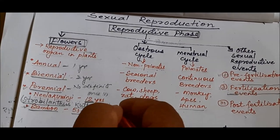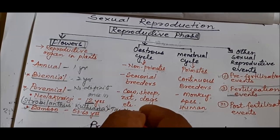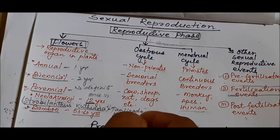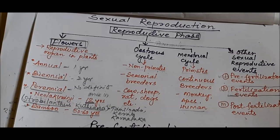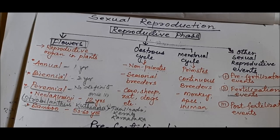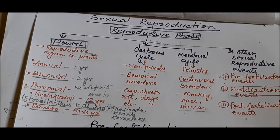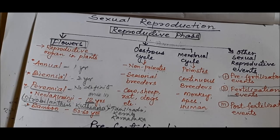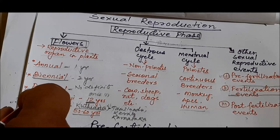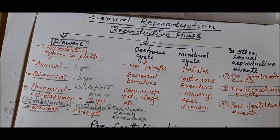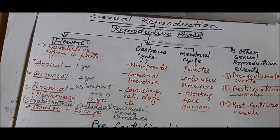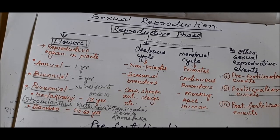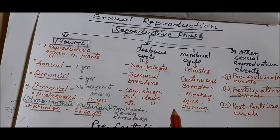The scientific name of Neelakurinji is Strobilanthes kunthiana. It gives a beautiful blue-colored flower found in the hills of Tamil Nadu, Kerala, and Karnataka. In the months of September and October, when these flowers appear, they create a beautiful blue stretch on the hills, attracting many tourists. Another example is the bamboo plant, which flowers once in 50 to 60 years.